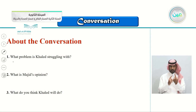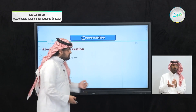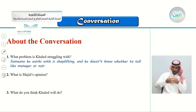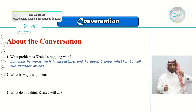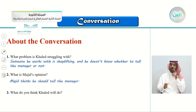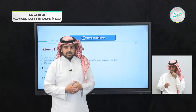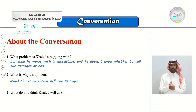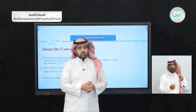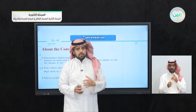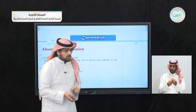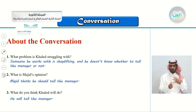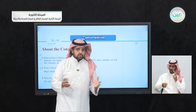About the conversation, we have three questions. First: what's the problem Khalid is struggling with? Someone he works with is shoplifting and he doesn't know whether to tell the manager or not. Second: what is Majid's opinion? Majid thinks he should tell the manager — 'blow the whistle on him' — tell the manager that your co-worker is stealing, or you would be in trouble. Third: what do you think Khalid will do? I think he will tell the manager because his co-worker has stolen twice — that is more than enough.